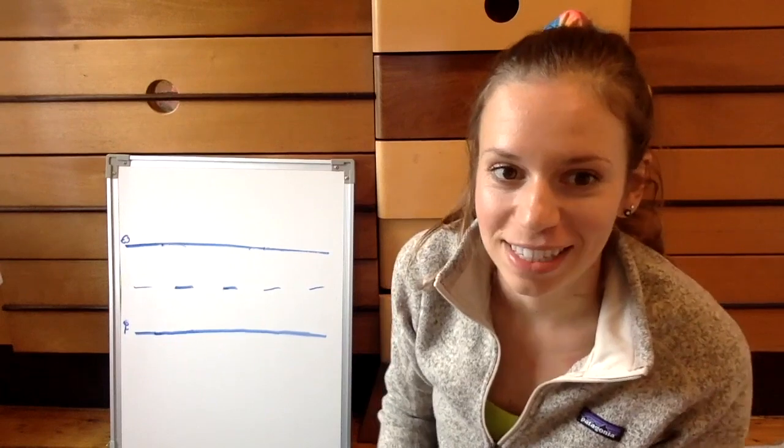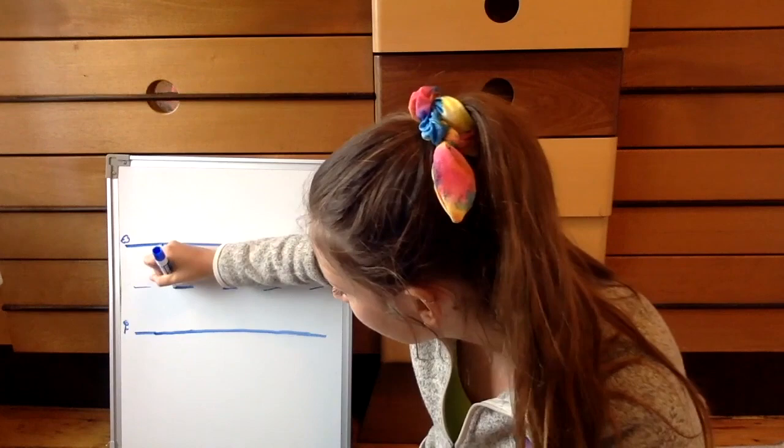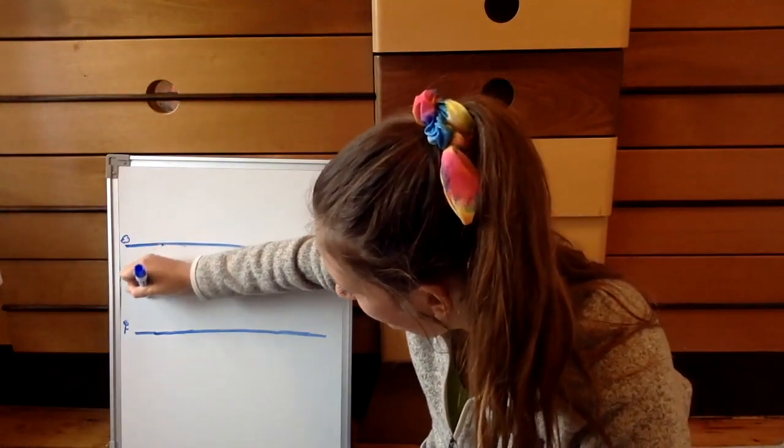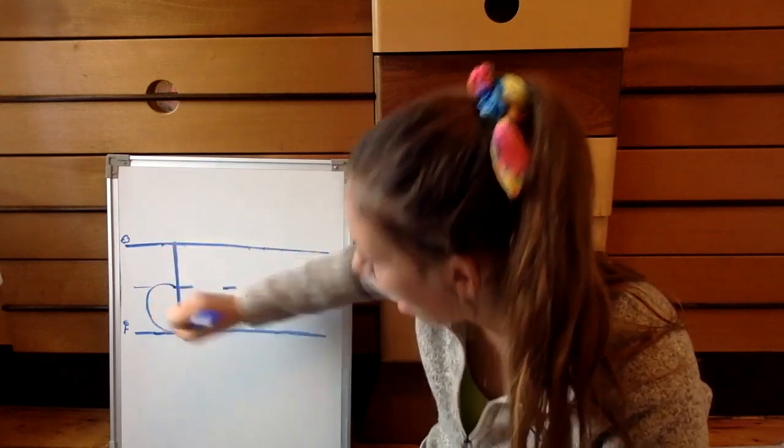This one we're gonna practice today is our lowercase d. For lowercase d, we actually start right there at the middle line. We go around, up, and back down.